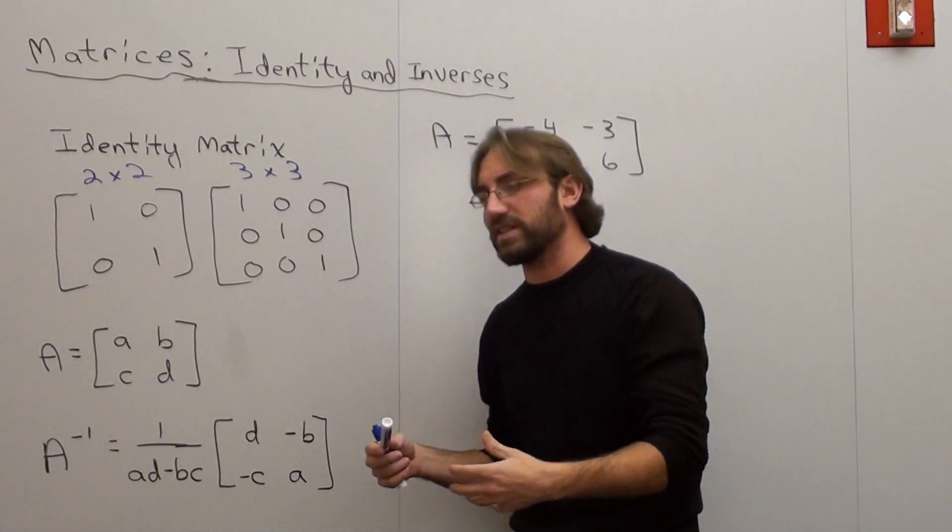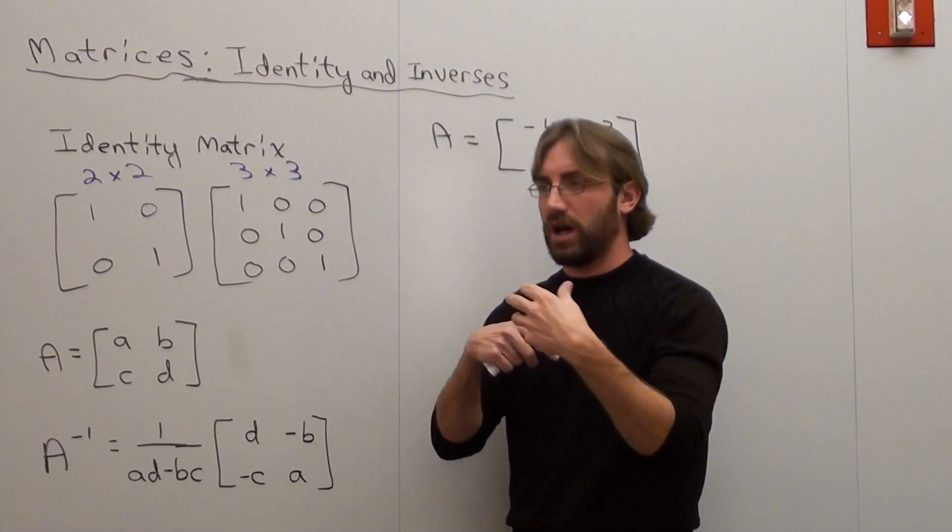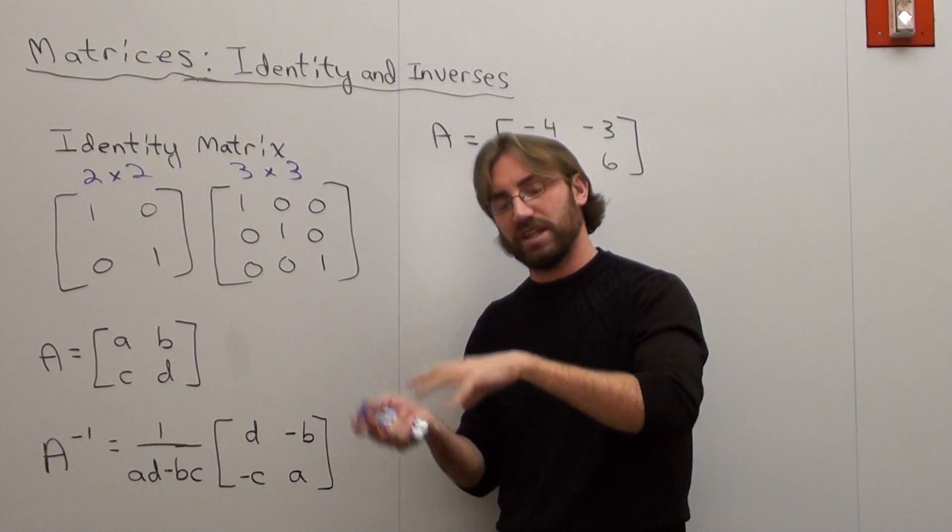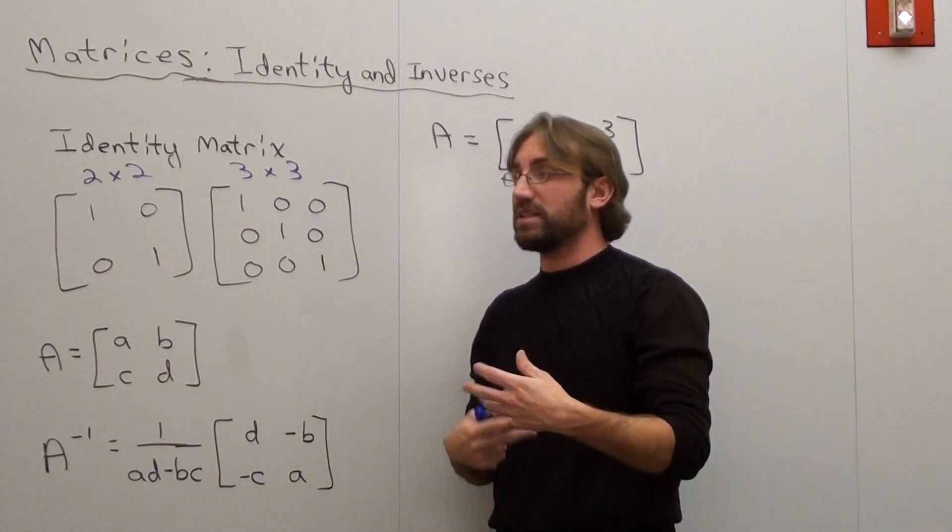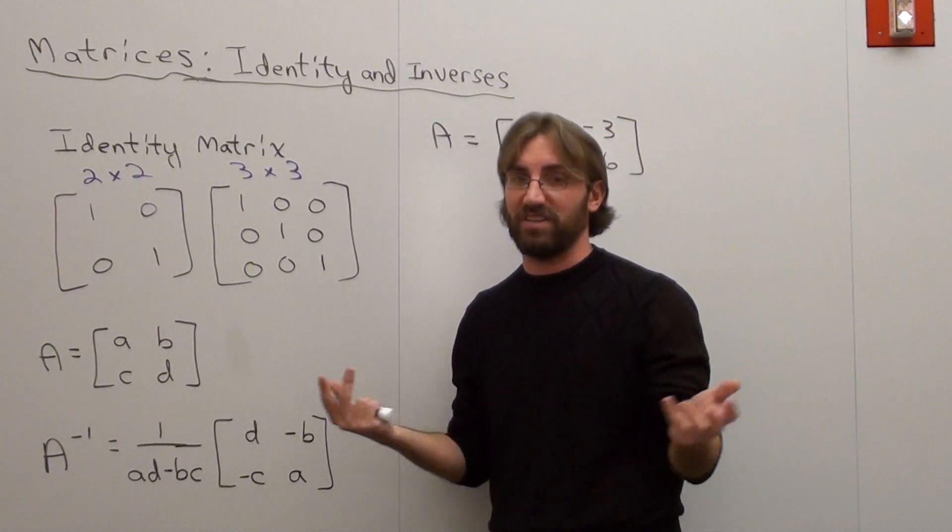Basically what that entails is that if you multiply a matrix and its inverse together, you're going to get this or this as an answer, or you're going to get something else as an answer, depending if it's a 3x3, 4x4, 5x5, etc.